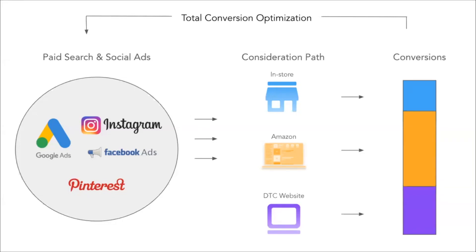This is why at Perpetua, the first place we've enabled Amazon Attribution beta for our software users is Google Search specifically — because after Amazon, Google Search is where product searches primarily happen. We want to ensure our Perpetua customers can effectively run Google ads driving traffic to their Amazon store, given that's the next most likely place shoppers are searching for products.